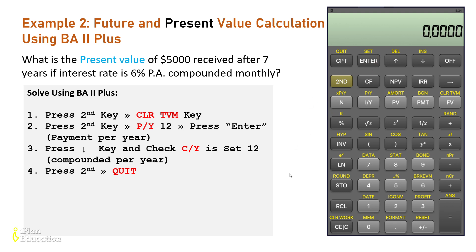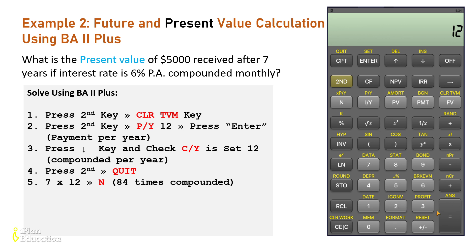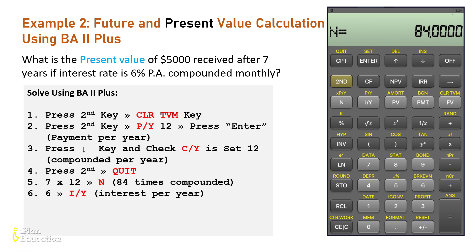Next, input N: seven years times 12 times a year gives you 84. Press 84 and then N. Then enter the interest rate. Note that you can input the values in any order. Enter six and then I/Y for six percent per year.